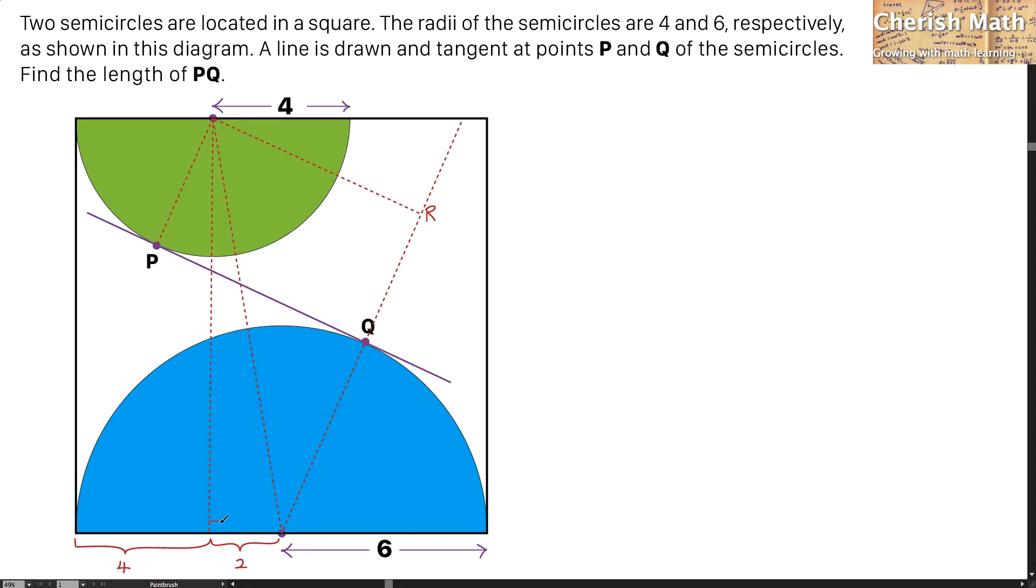So I'm going to label this as right angle, and this too, right angle, and for this part as well. The side length of this square is by using twice the radius of the blue semicircle, and that is 6 times 2 is equal to 12.